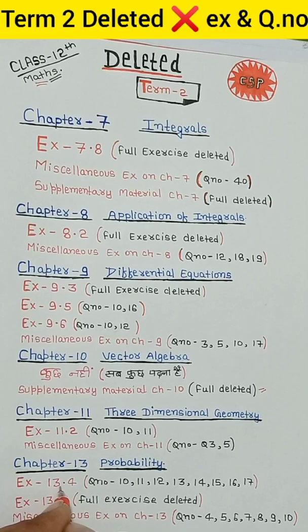Chapter 13, Probability. Exercise 13.4, question numbers 3 and 17 deleted. Exercise 13.5, full exercise deleted. Exercise 13.6, question numbers 3 and 17 deleted.